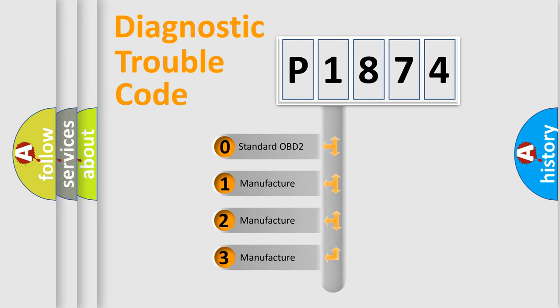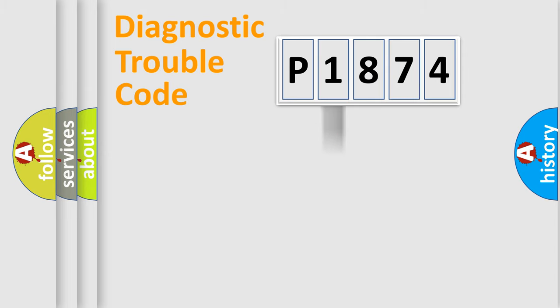If the second character is expressed as zero, it is a standardized error. In the case of numbers 1, 2, 3, it is a more precise expression of the car specific error.